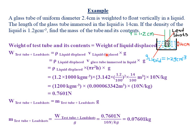We are not given the volume of the liquid displaced, but the volume of the liquid displaced must equal the volume of the glass tube immersed in the liquid. The part of the glass tube immersed occupies space within the liquid, displacing an equal volume. Therefore, when finding volume, we use the cross-sectional area and the height of 14 cm that is submerged.